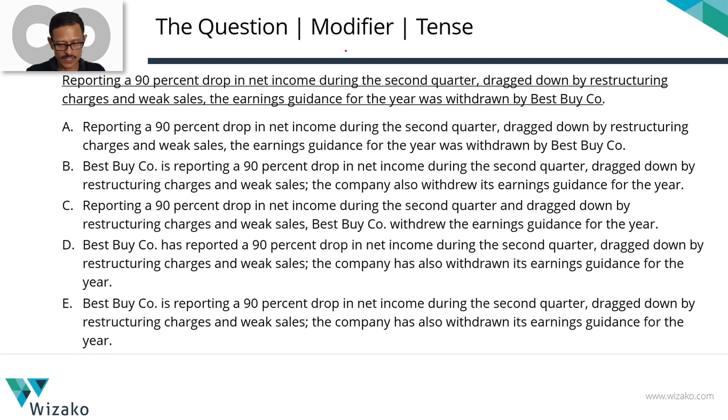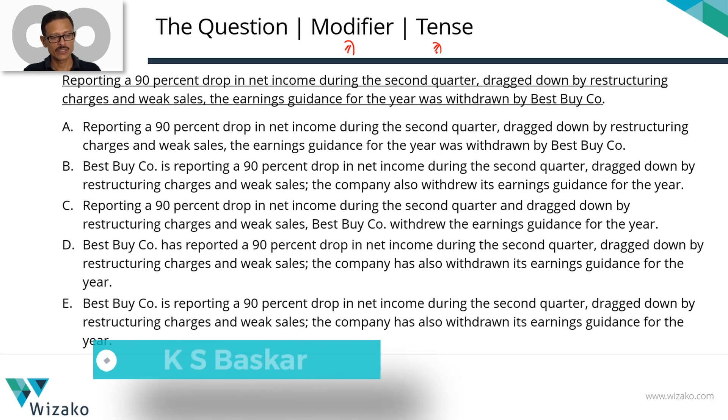Two error types are tested in this question: one is a modifier error and the second is a tense error. Let's do a vertical scan of the five answer options.